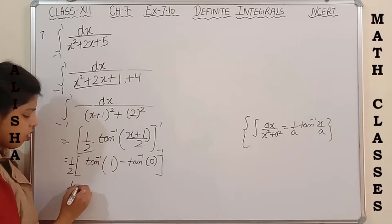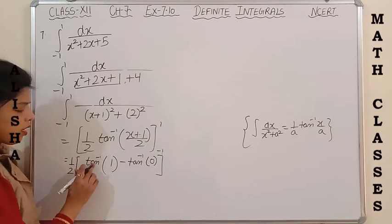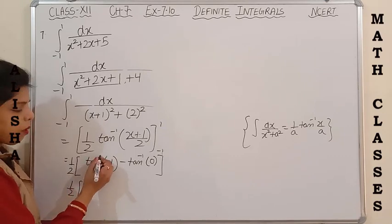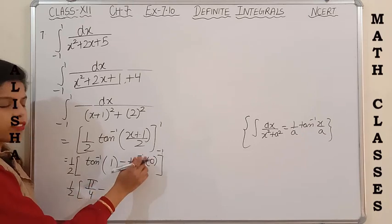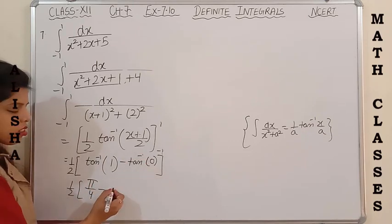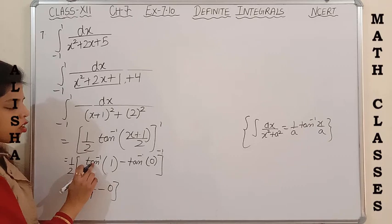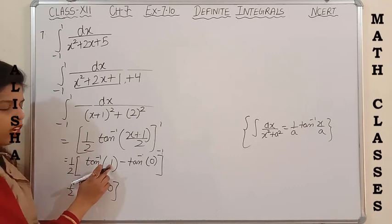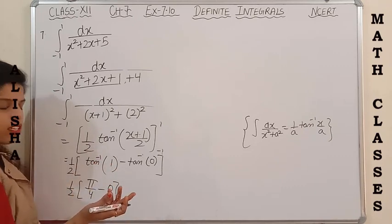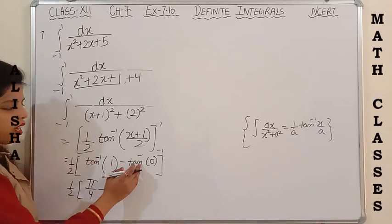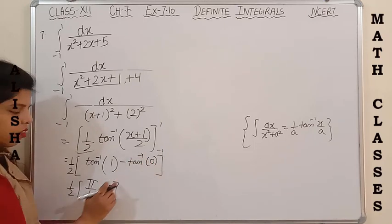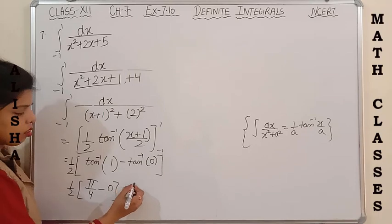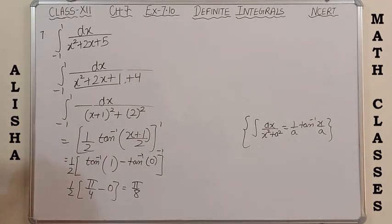We know that tan⁻¹(1) = π/4 because tan(45°) = 1, and tan⁻¹(0) = 0 because tan(0) = 0. So the answer is (1/2) × (π/4 - 0) = π/8. Please note down.